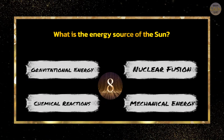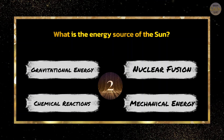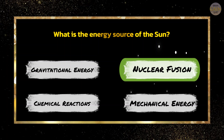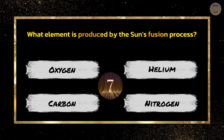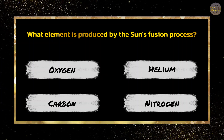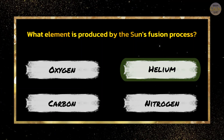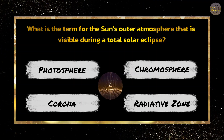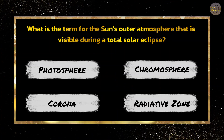What is the energy source of the Sun? Nuclear fusion. What element is produced by the Sun's fusion process? Helium. What is the term for the Sun's outer atmosphere that is visible during a total solar eclipse? Corona.